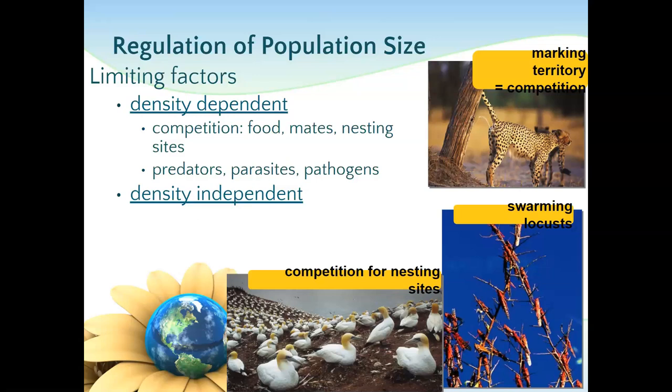Density-dependent factors change depending on the density of the organisms. Density-independent factors affect everybody the same. Whether we're clumped together outside and it rains, or spread out, we're all going to get drenched — that's independent of how closely positioned we are. Abiotic factors are pretty much going to be density-independent: the amount of sun, wind, weather patterns — those affect everybody the same.